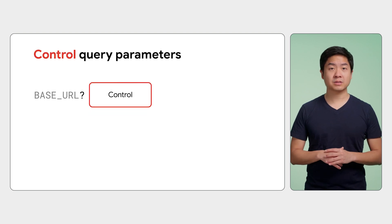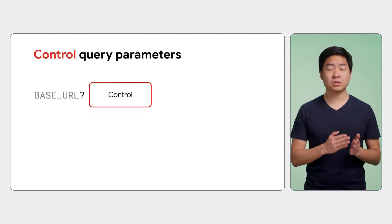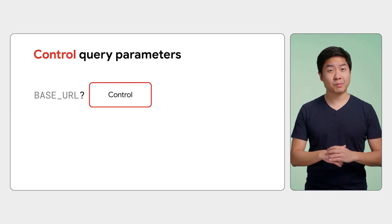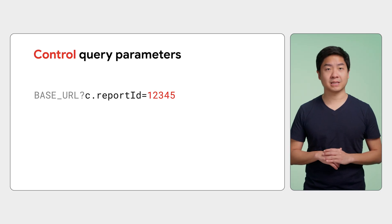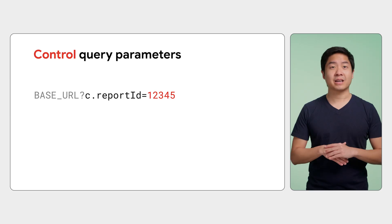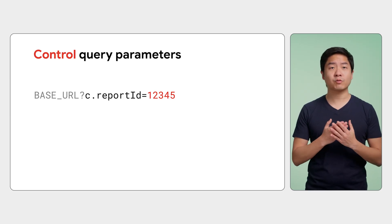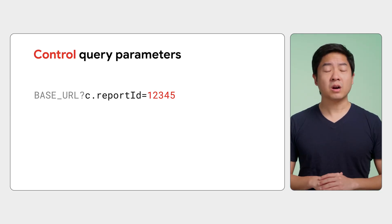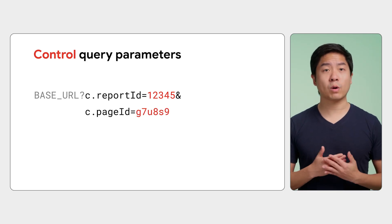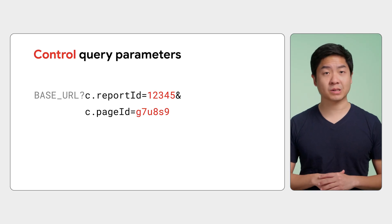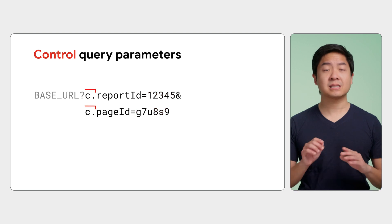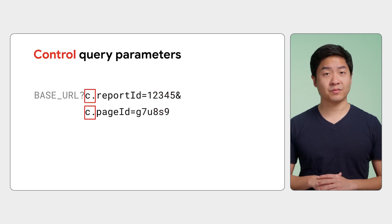The control query parameters control the state of the generated report when the user navigates to the Linking API URL. For example, the most important parameter is c.reportId, which determines which Looker Studio report to use as a template — the ID comes from the report's own URL. Another useful control parameter is c.pageId, which determines what page your user will first land on in the generated report. All control query parameters are prefixed with 'c.' for readability and convenience.